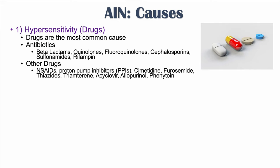Other drugs that can cause AIN include NSAIDs such as ibuprofen, proton pump inhibitors like pantoprazole, furosemide, thiazide diuretics, triamterene, acyclovir, allopurinol which is used for gout, and the anti-epileptic medication phenytoin.